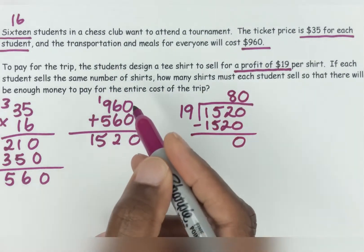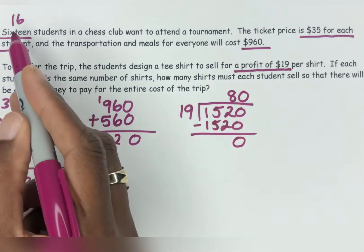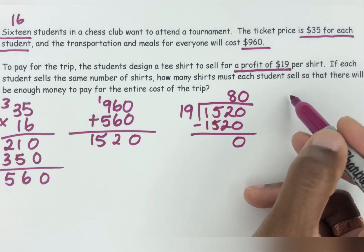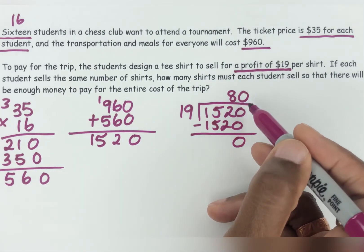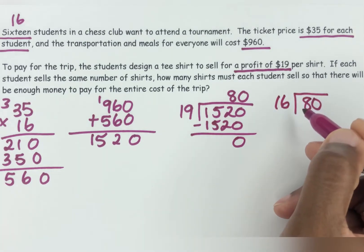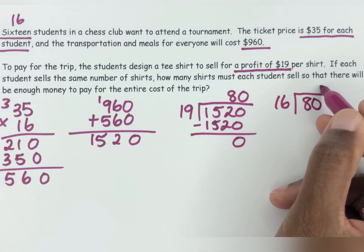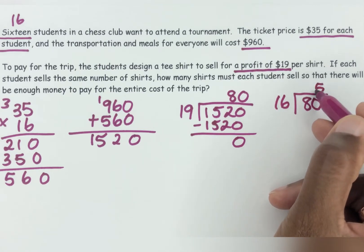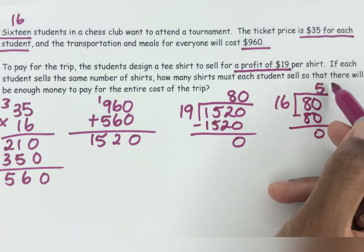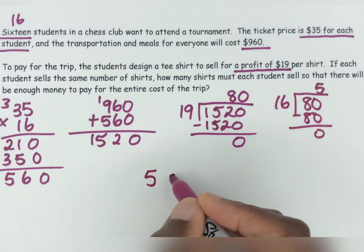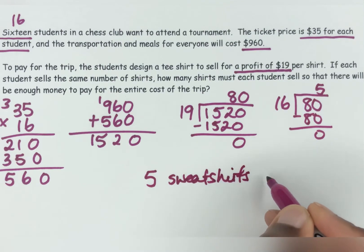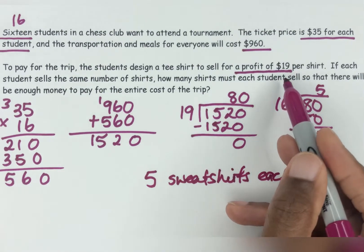So we got 80 shirts total. But if each student sells the same number of shirts, and there's 16 students, then we have to divide 80 by 16. Five times 16 is 80, so they'd have to sell five shirts each. And that will give them their profit of $19 per shirt.